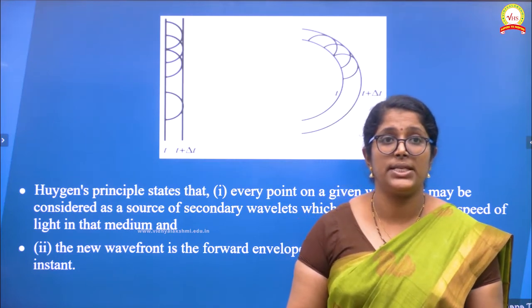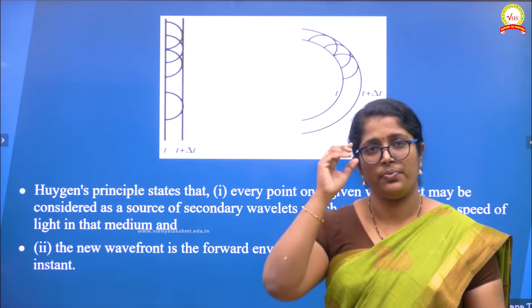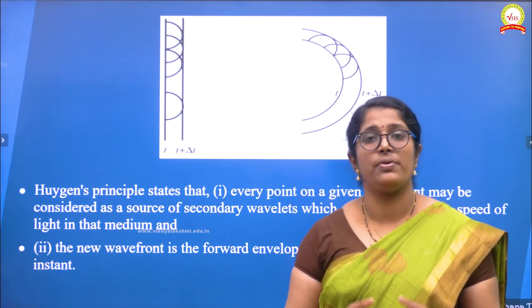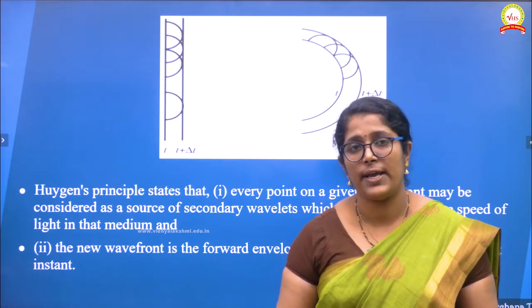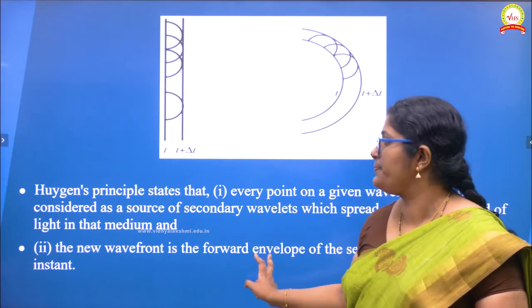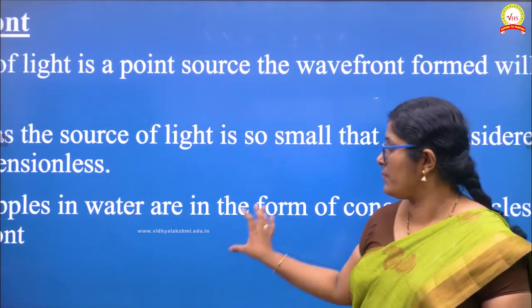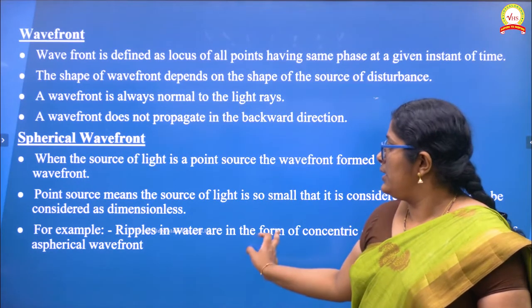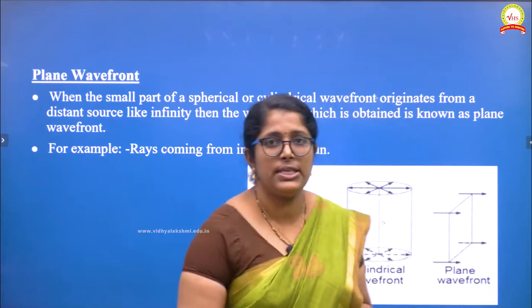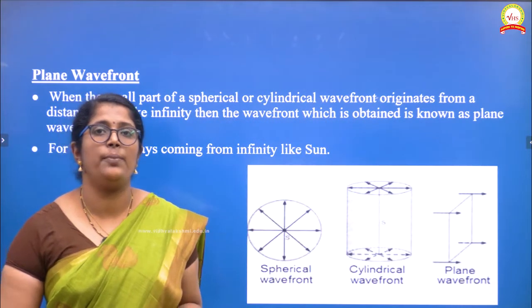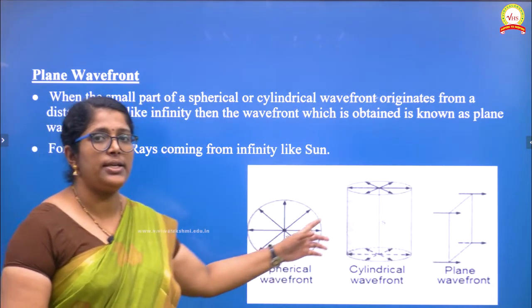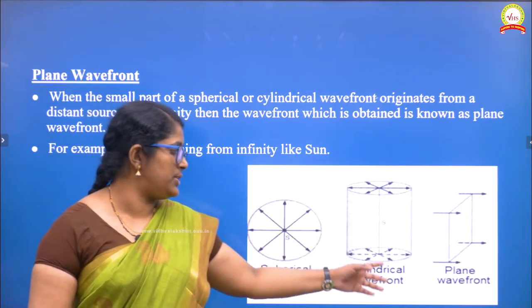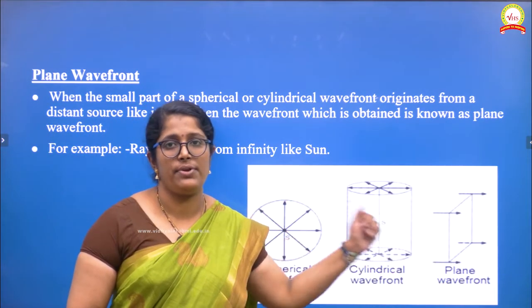In order to see the details, I am going to explain the types of wavefronts. I will show you the diagram of types of wavefronts. There are three types of wavefronts. The first one is spherical wavefront, the next one is cylindrical wavefront, and the last one is plane wavefront.